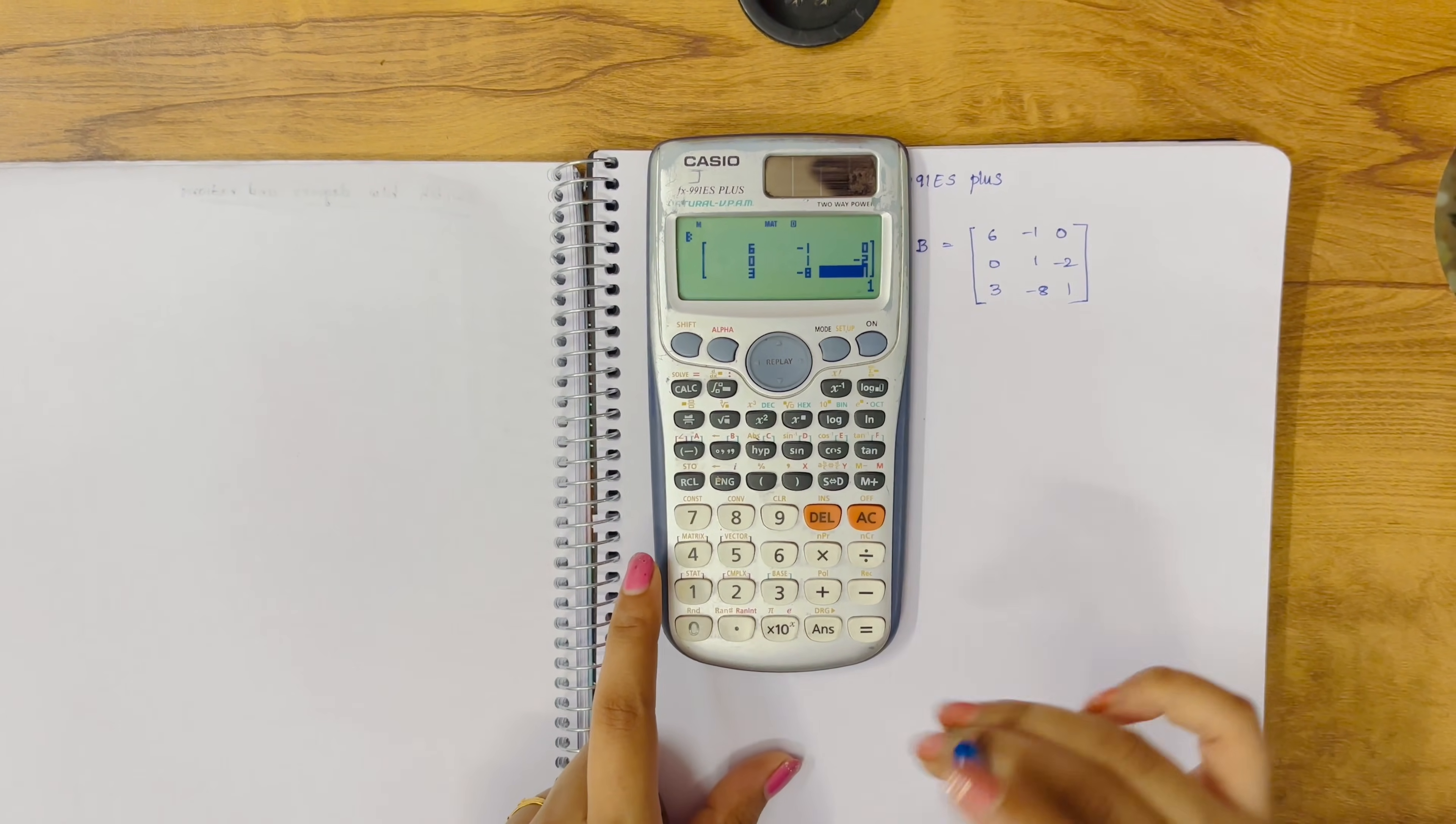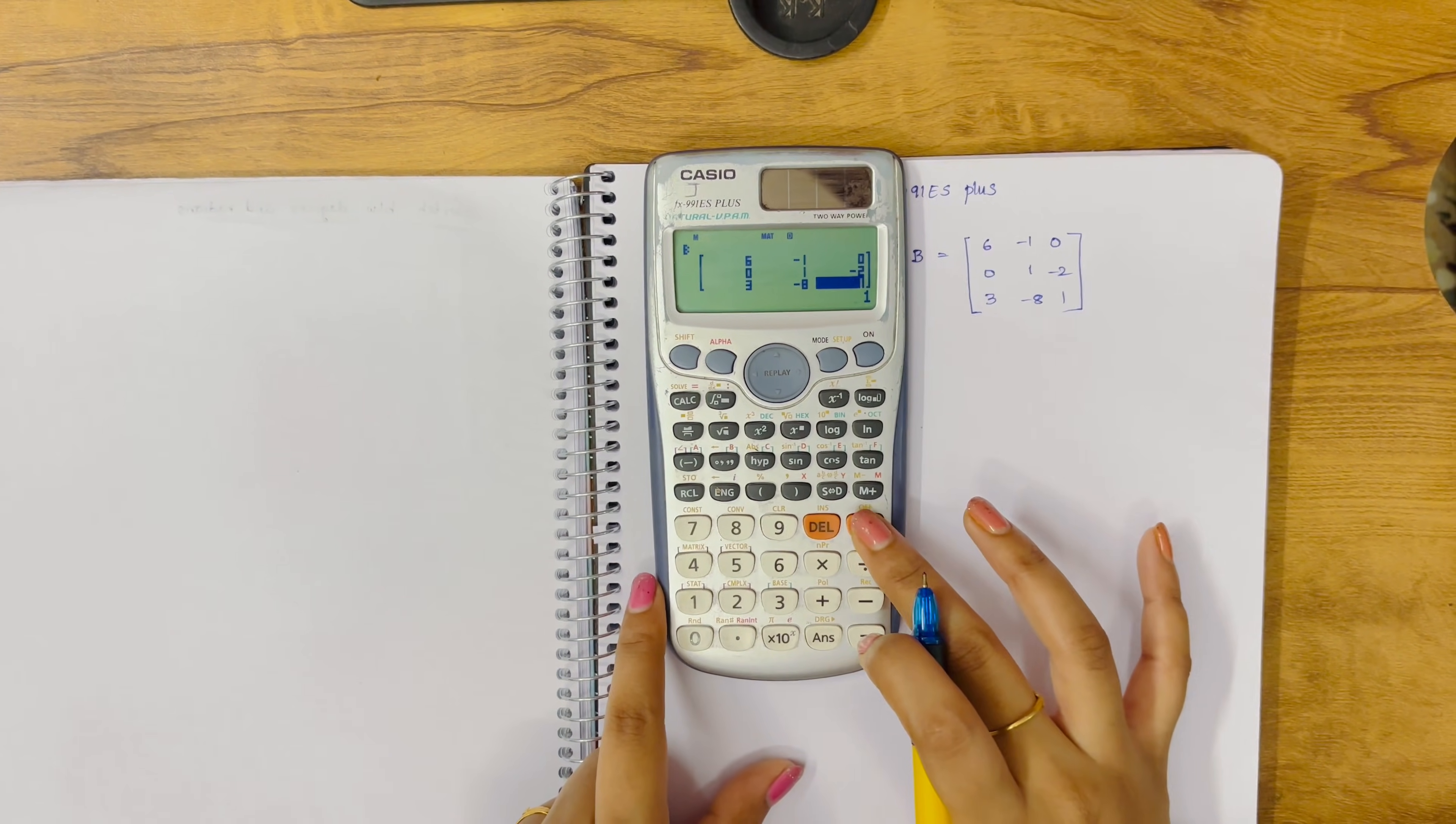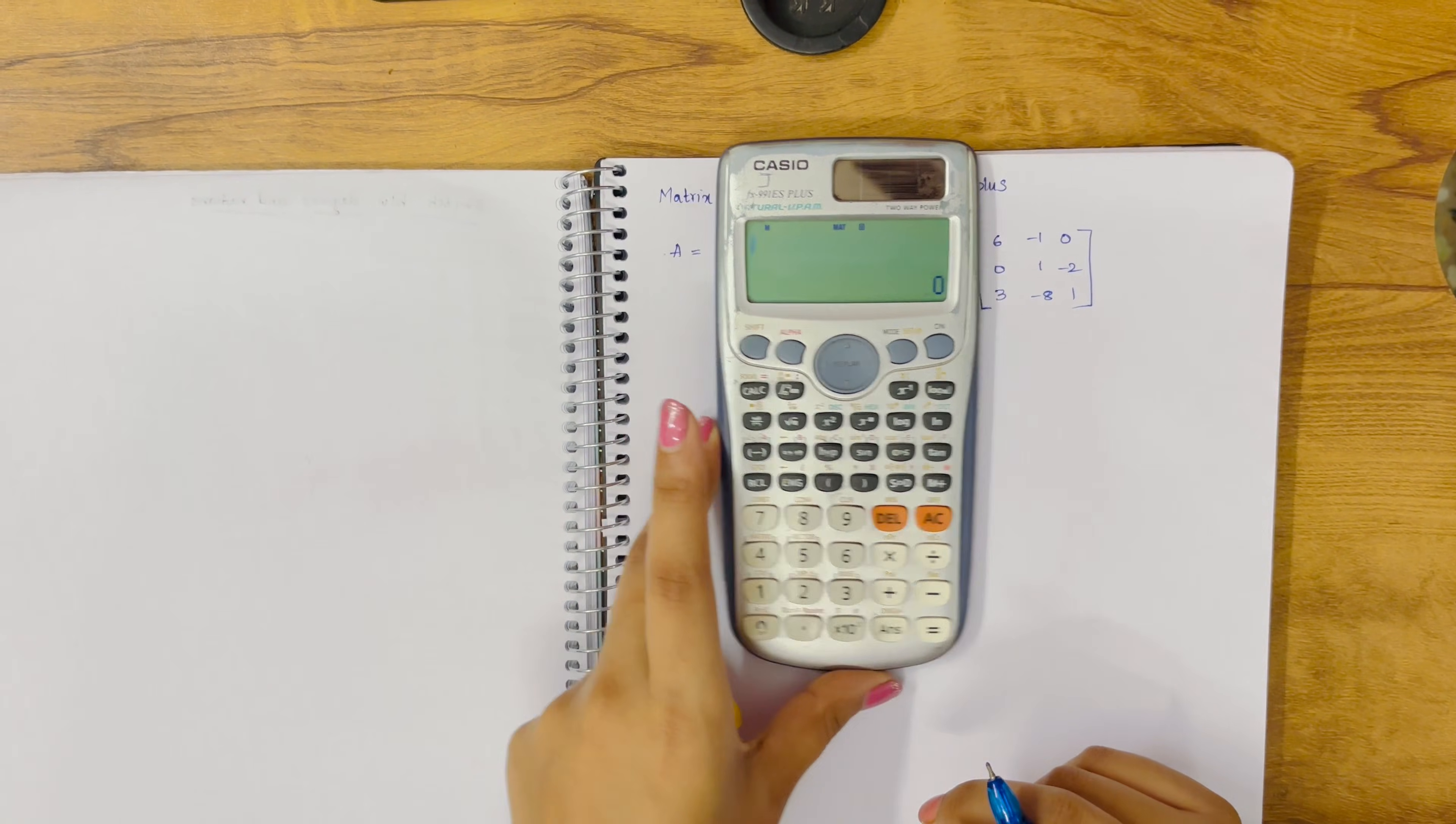Now we are storing the value. Just click on AC. The value is stored. Now click to calculate this matrix.